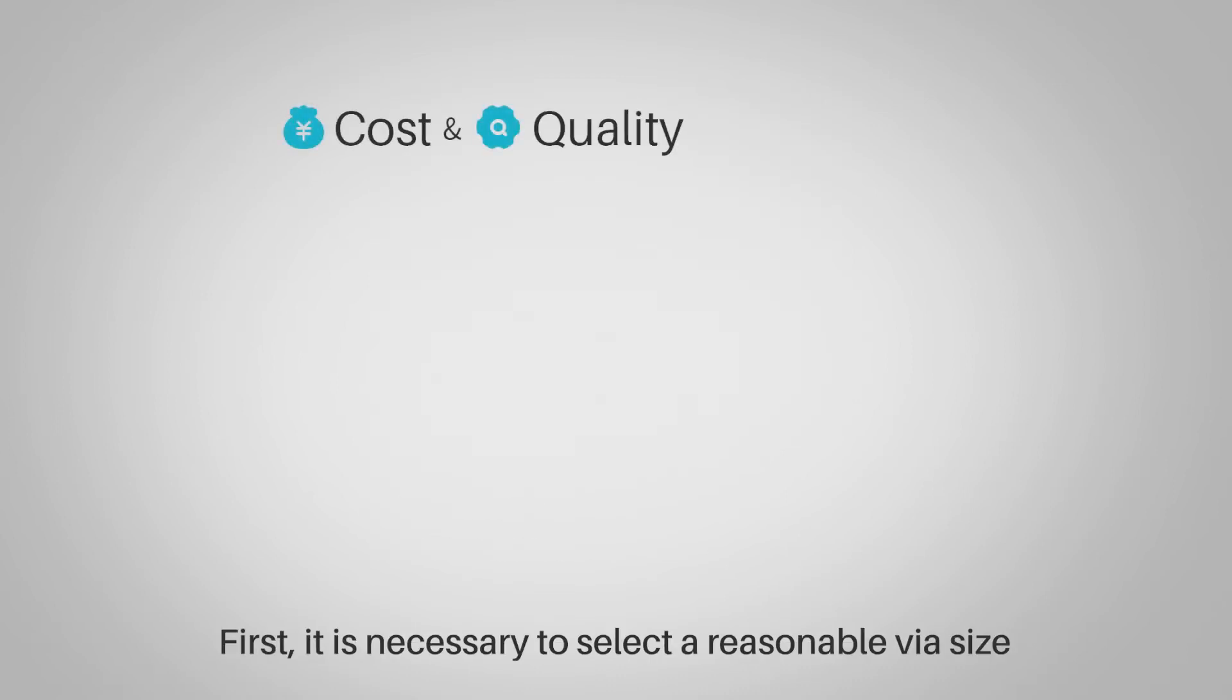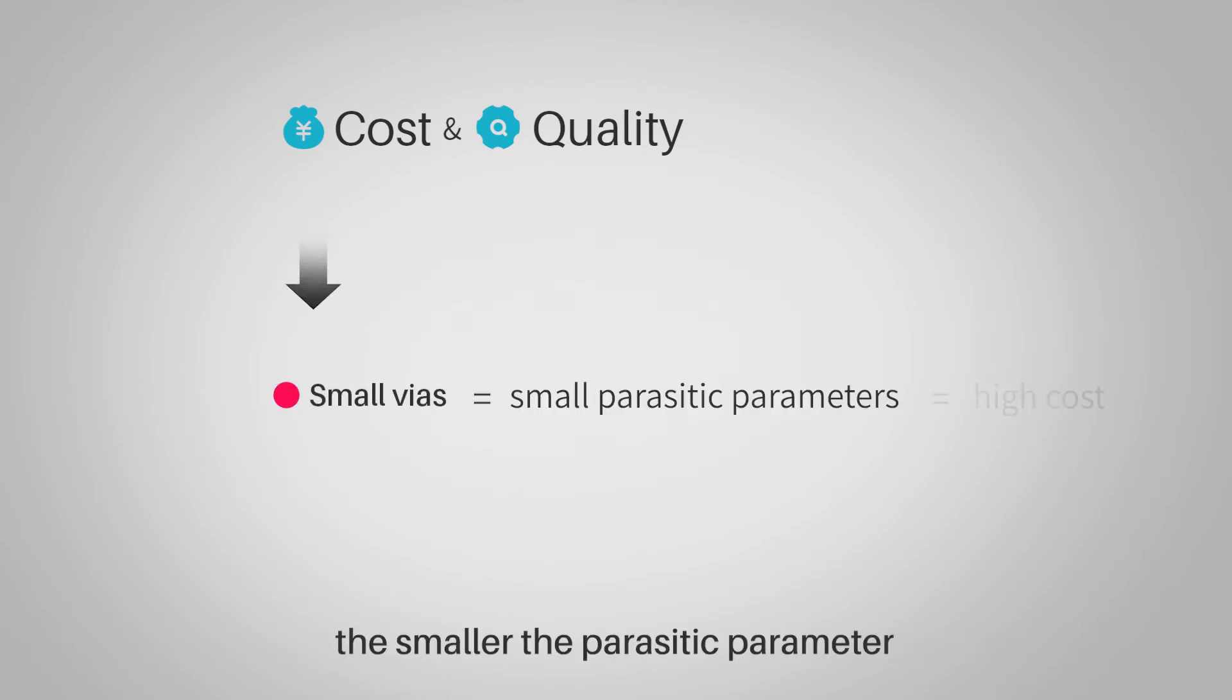First, it is necessary to select a reasonable via size according to both cost and signal quality. The smaller the via, the smaller the parasitic parameter, but the higher the cost.